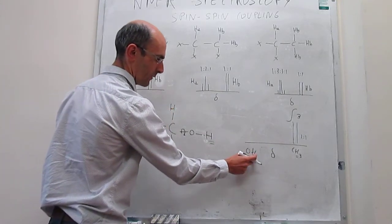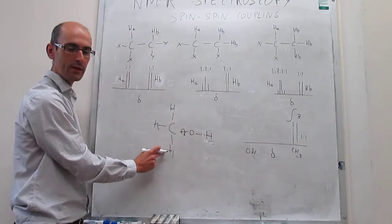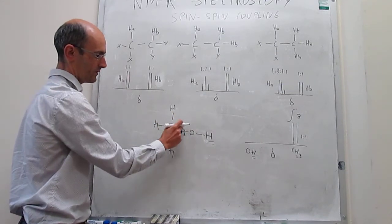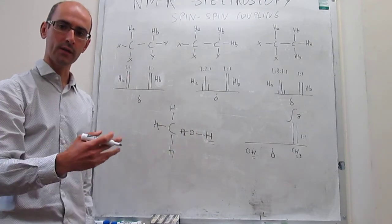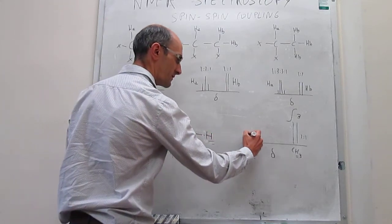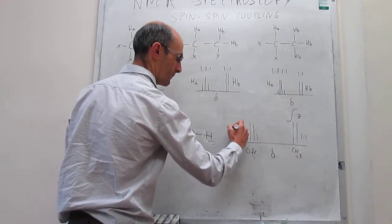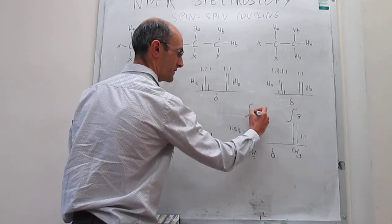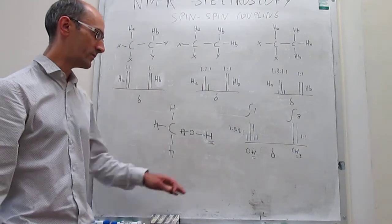What about the signal due to OH? This signal will be split by the action of three NMR-active nuclei within three bonds — one-two-three, one-two-three, one-two-three — so that leads to a quartet. Three NMR-active nuclei split that signal into a quartet, with relative intensities one-to-three-to-three-to-one. The integral of this peak equals one because only one NMR-active nucleus contributes to the overall signal.